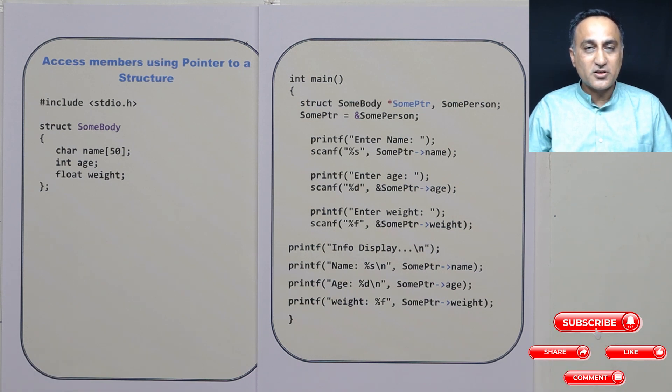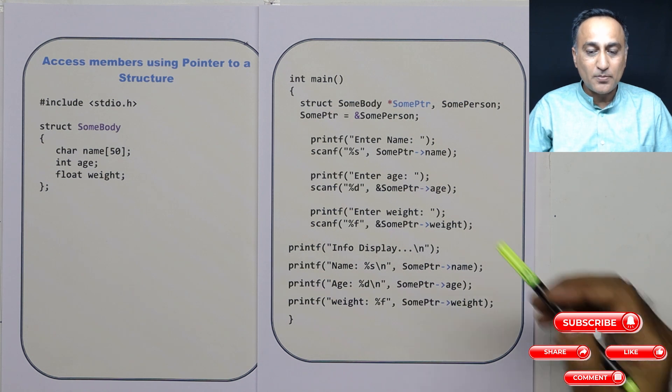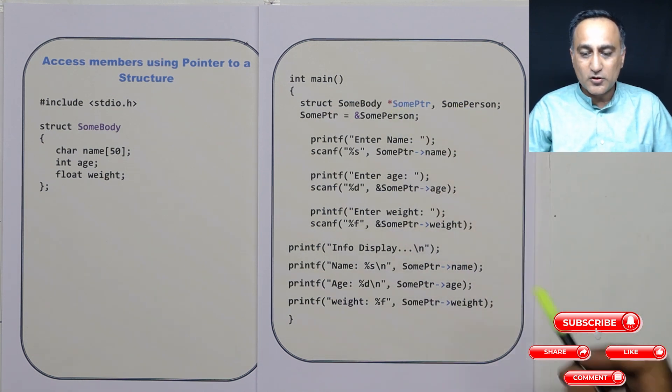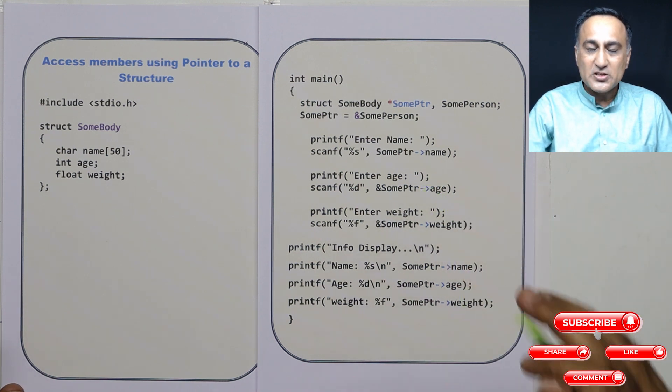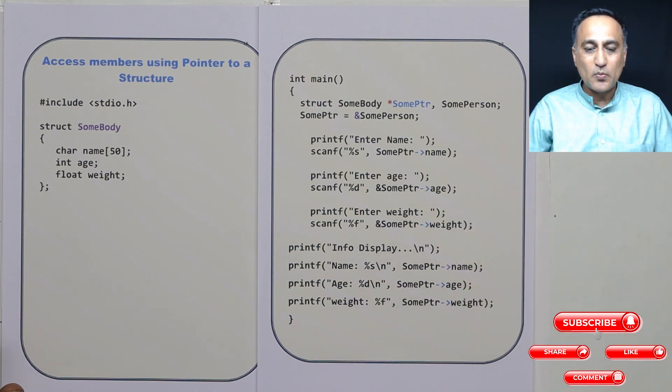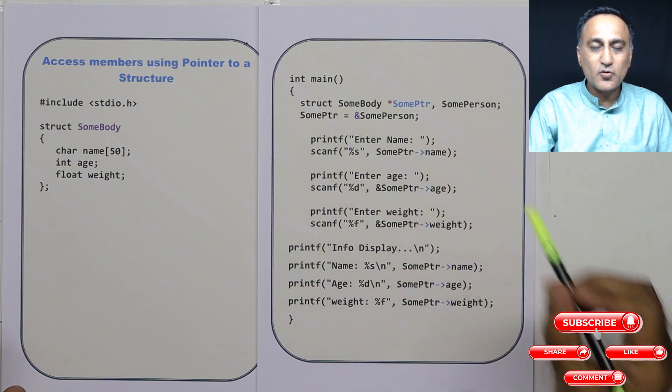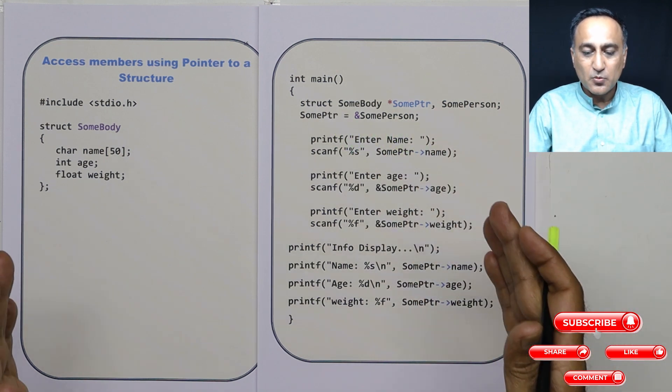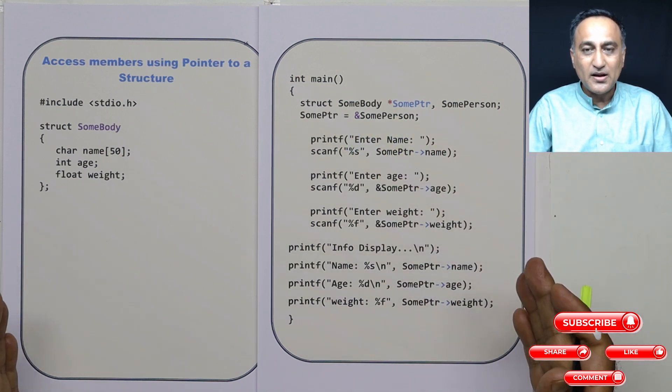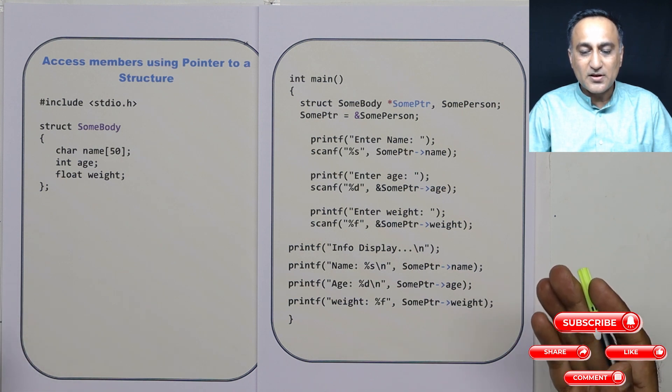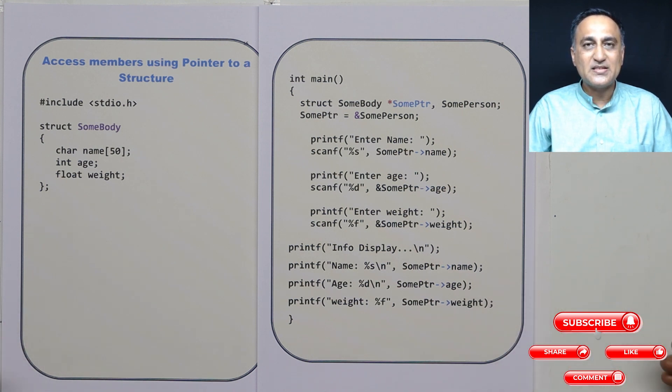So you can see this arrow operator has really simplified our use of a pointer to a structure without getting us into a lot of complications of using that bracket star dot. And also this arrow operator is preferably, or please use this arrow operator whenever you have a pointer to a structure because your program is more easy to understand, readable, and it really makes use of the features which are provided by C.